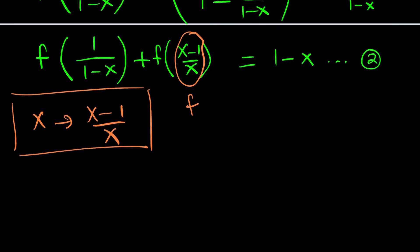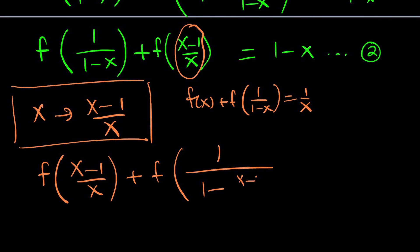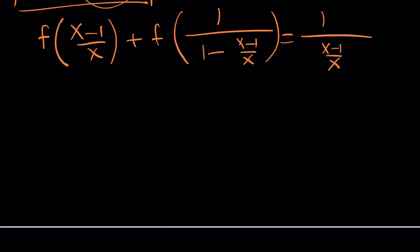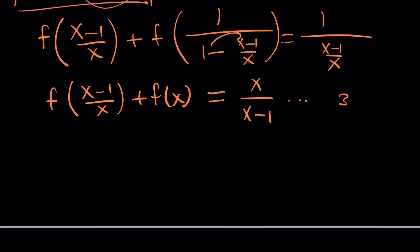Let me copy the original equation for reference: f(x) plus f(1 over 1 minus x) equals 1 over x. Now replacing x with (x minus 1) over x gives us f of (x minus 1) over x plus f of 1 over 1 minus (x minus 1) over x, and on the right-hand side 1 over (x minus 1) over x. After simplifying — making a common denominator, x minus x plus 1, negating the negative 1 — we get f(x minus 1 over x) plus f(x) on the left, which means we did the right thing. This is equation number 3.